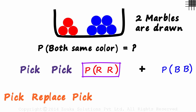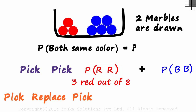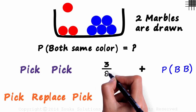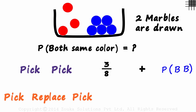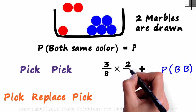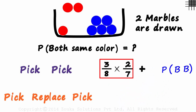What is the probability of both marbles being red? There are three red marbles out of eight, so the probability of the first marble being red is 3 over 8. We are not placing it back in the box, so now there are two red marbles out of seven total. The probability of the second marble being red is 2 over 7. This gives the probability of both marbles being red.